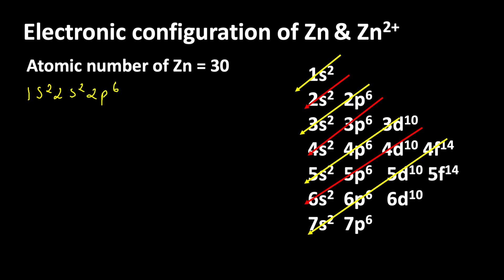After 2p, electrons enter into 3s2, 3p6, then 4s2, then 3d10. If we count all the electrons, we get the atomic number of zinc — that is, the number of electrons available in zinc.